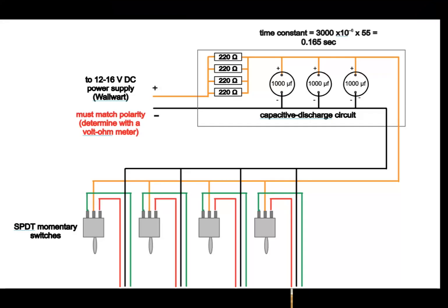So here's a diagram of the capacitive discharge circuit with these four momentary switches. The wires down below - the three wires green, black and red - go to each switch machine. Again, make sure you match the polarity of the power supply to that of the polarity of the capacitors.